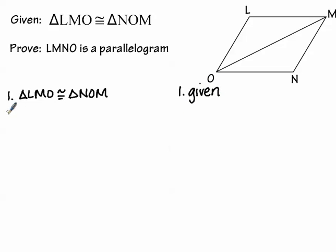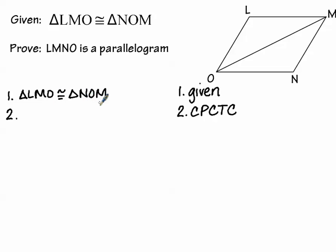We have two congruent triangles and we need to determine which parts will be useful in proving this is a parallelogram. I notice that segment LM — the first two letters in the first triangle name — is congruent to segment NO. And segment LO, the left side of the quadrilateral, is congruent to segment NM, the right side. Using CPCTC, we could state those parts are congruent and then declare LMNO a parallelogram because its opposite sides are congruent — that approach would take three steps.